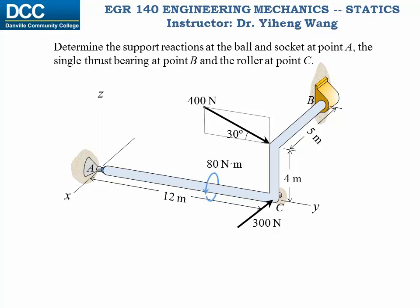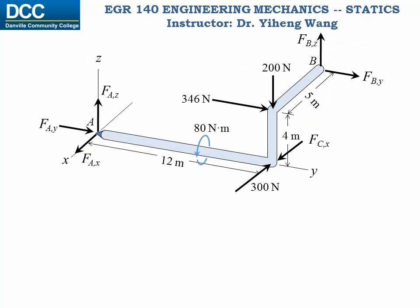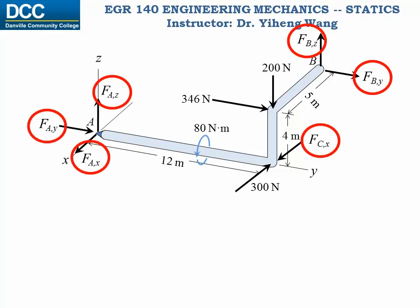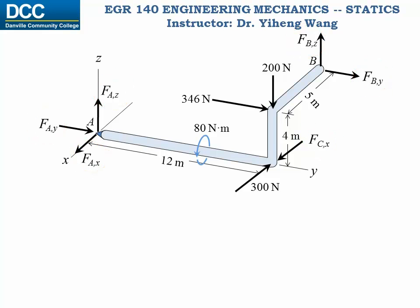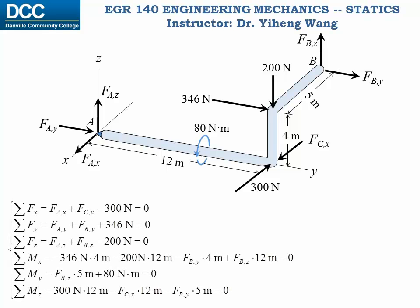Therefore, we note all forces and moments acting on the body, and we have six unknowns. We write the six scalar equations for equilibrium, summarizing forces in three directions and moments about the three axes — everything equals zero. Six equations, six unknowns. We can now solve for all of them.